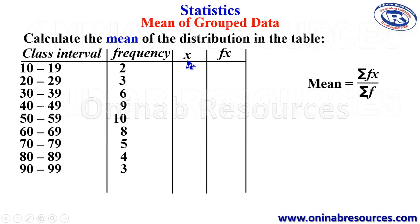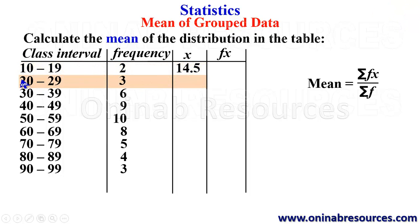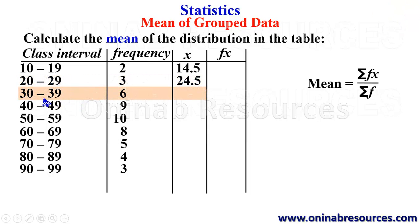X is the mid-value of the class intervals. For the first class interval, we add the lower class and the upper class and divide the sum by two. So 10 plus 19 gives 29; 29 divided by 2 gives 14.5. The second class interval: 20 plus 29 gives 49; 49 divided by 2 gives 24.5. The next: 30 plus 39 gives 69; 69 divided by 2 gives 34.5.